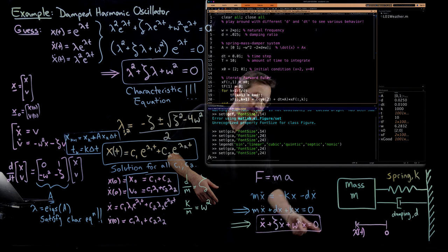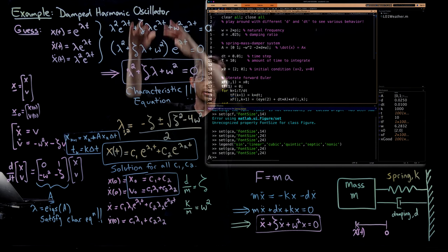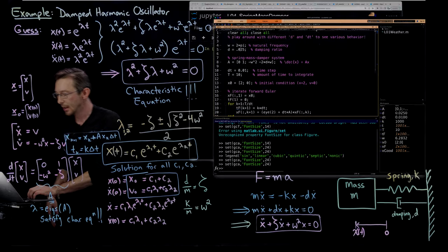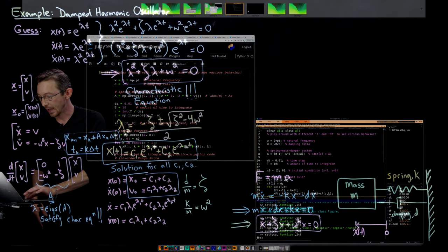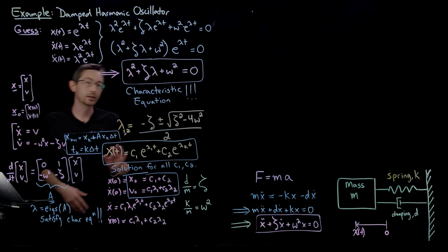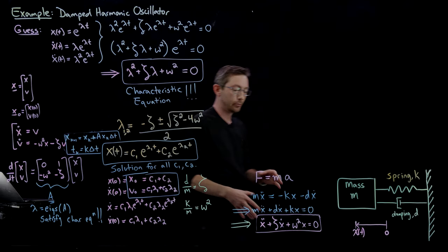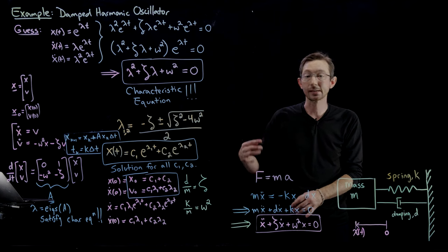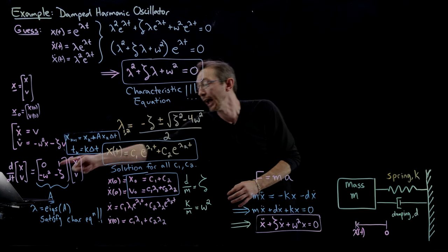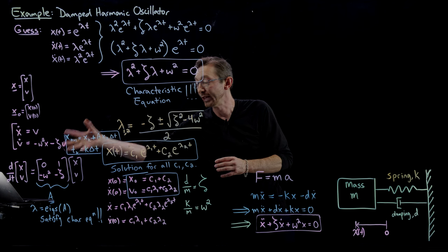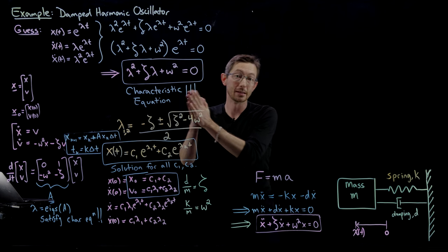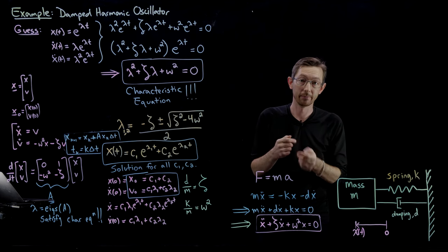Next time we'll do more examples of second-order systems, derive another system, go through the same math, and solve with initial data for the constants. Then we'll move on to higher-order equations with triple and quadruple dots, and look at how when you write them as systems of equations, the eigenvalues and the characteristic equation mean the same thing. Stay tuned.